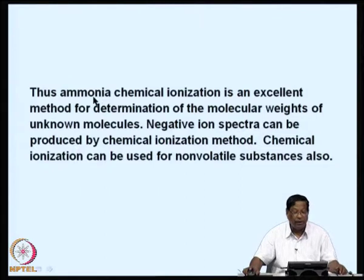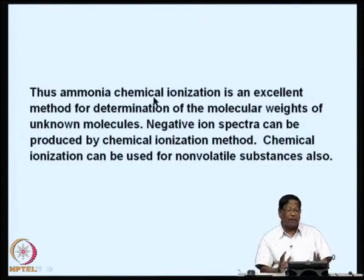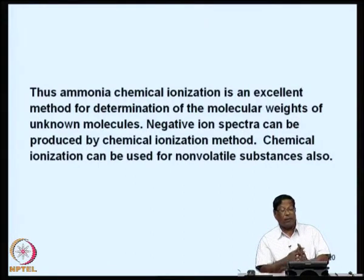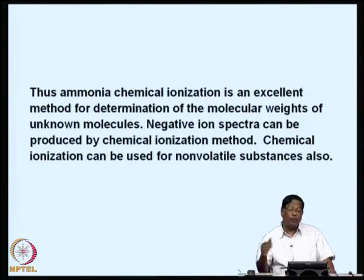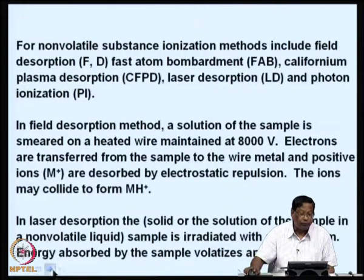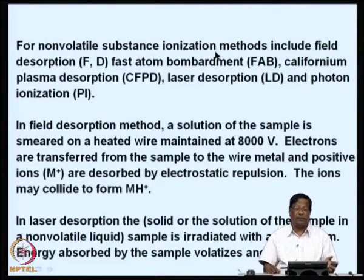Ammonia chemical ionization is an excellent method for the determination of molecular weights of unknown molecules. Negative ion spectra can also be produced by chemical ionization. Chemical ionization can be used for non-volatile substances as well. For non-volatile substances, ionization methods include field desorption, fast atom bombardment (FAB), californium plasma desorption (CFPD), laser desorption, and photon ionization.